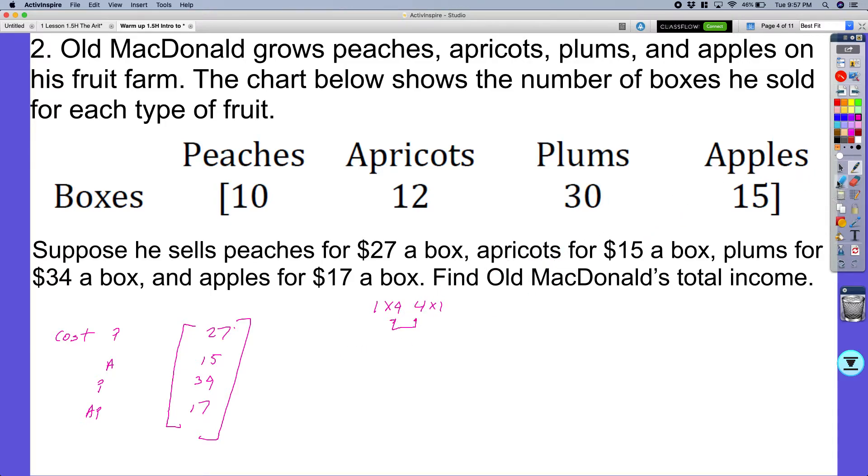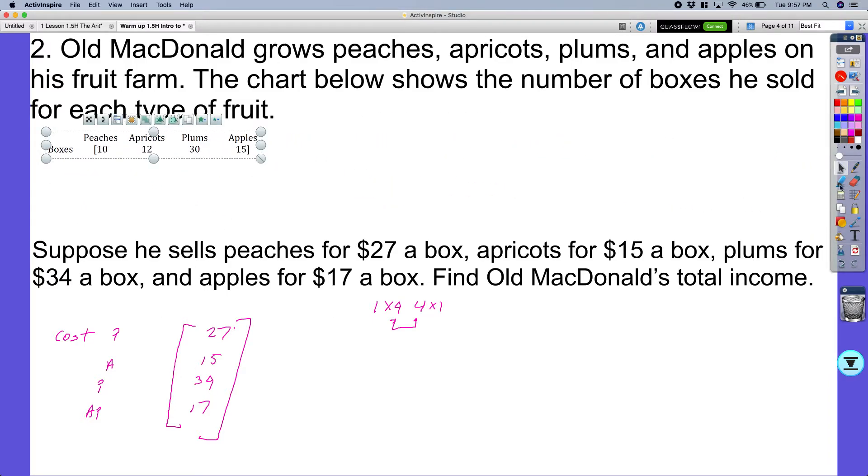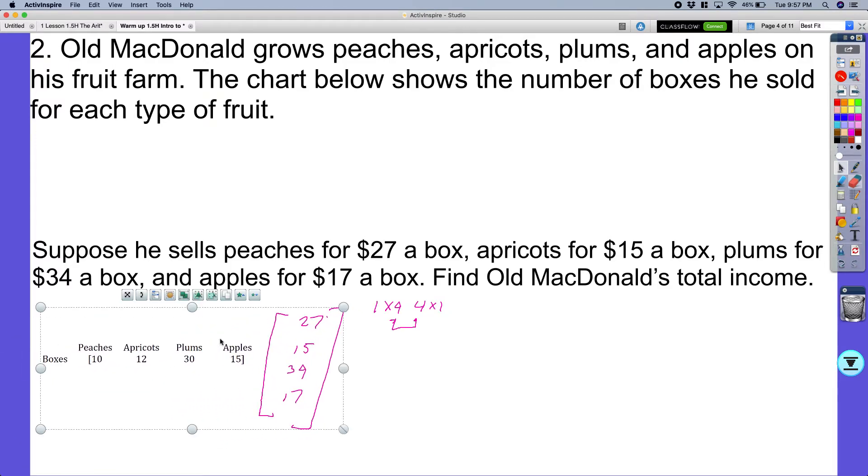And I would say it would make more sense if it was a 1 by 1 grid. So that means I am going to have a matrix. Let me go ahead and shrink this down so we can move them next to each other. So that means I'm going to have my 1 by 1. I'm going to multiply that by my 1 by 4 and multiply that by my 4 by 1.